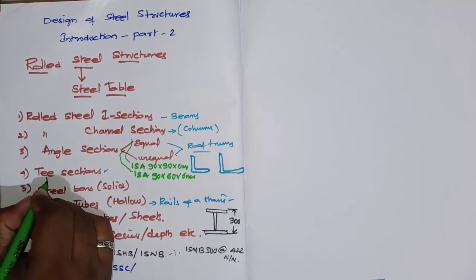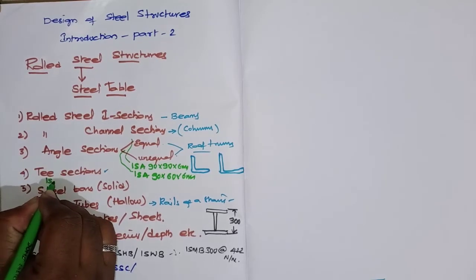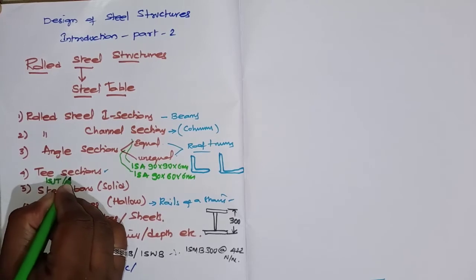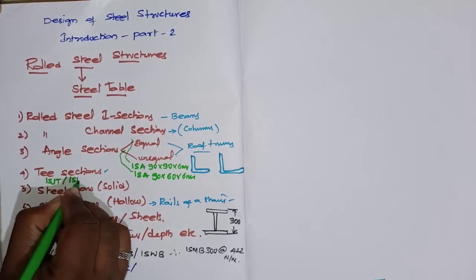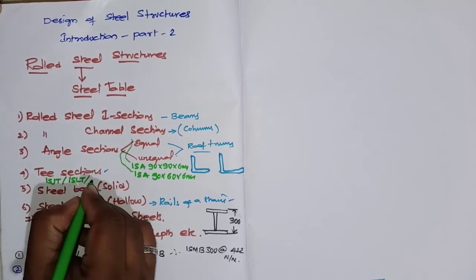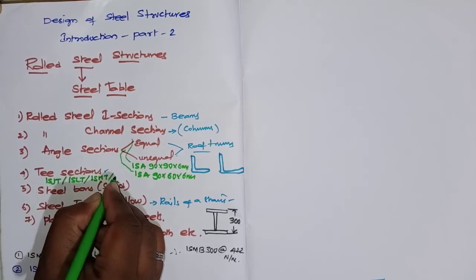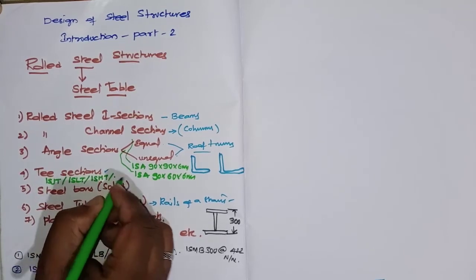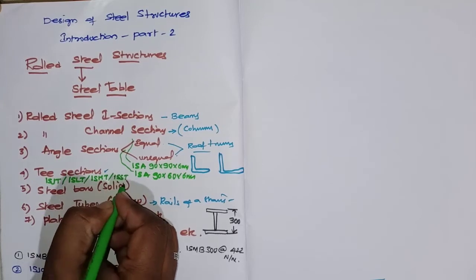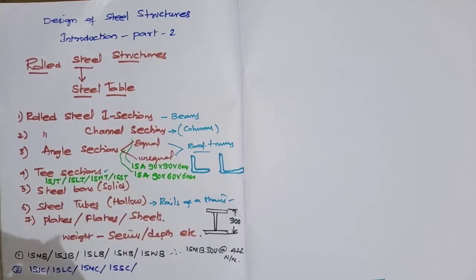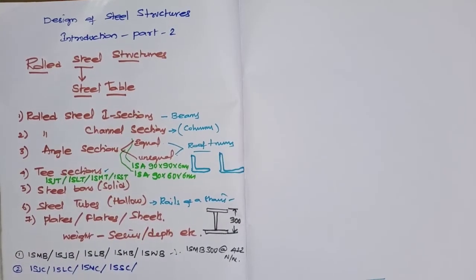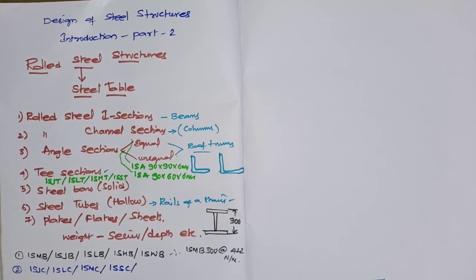T-sections are further classified as Indian Standard Junior T (ISJT), Indian Standard Light T (ISLT), Indian Standard Heavy Flange T, and Indian Standard Special Legged T-section (ISST). These are the different categories of T-sections.